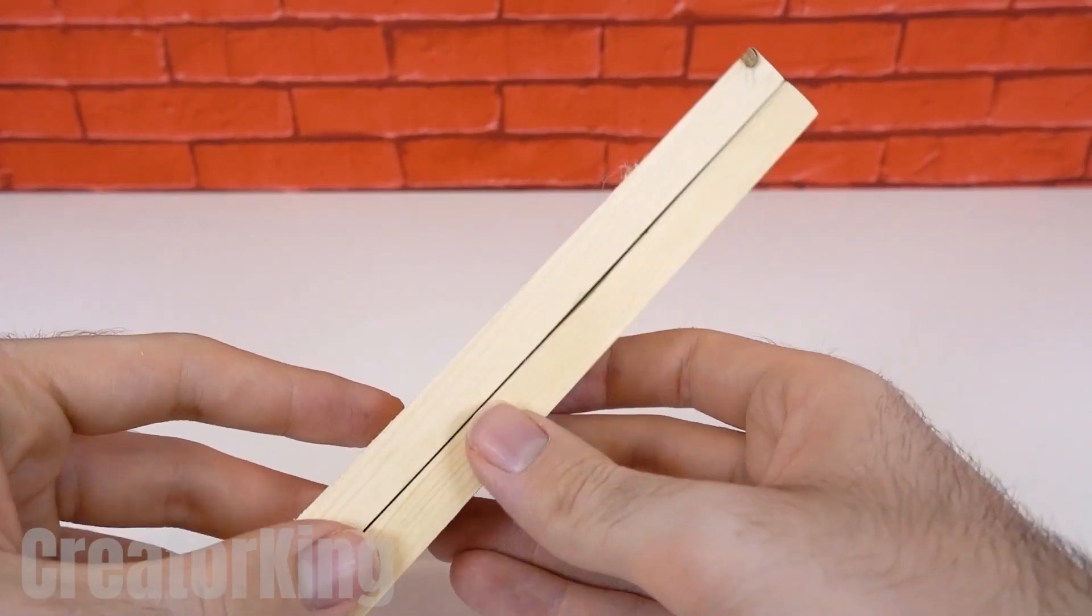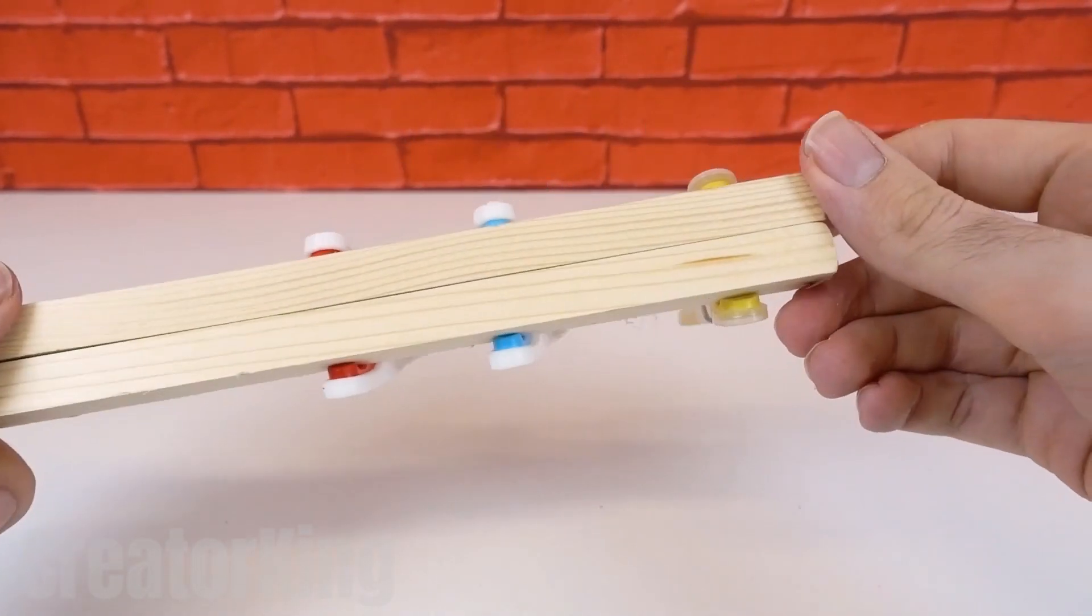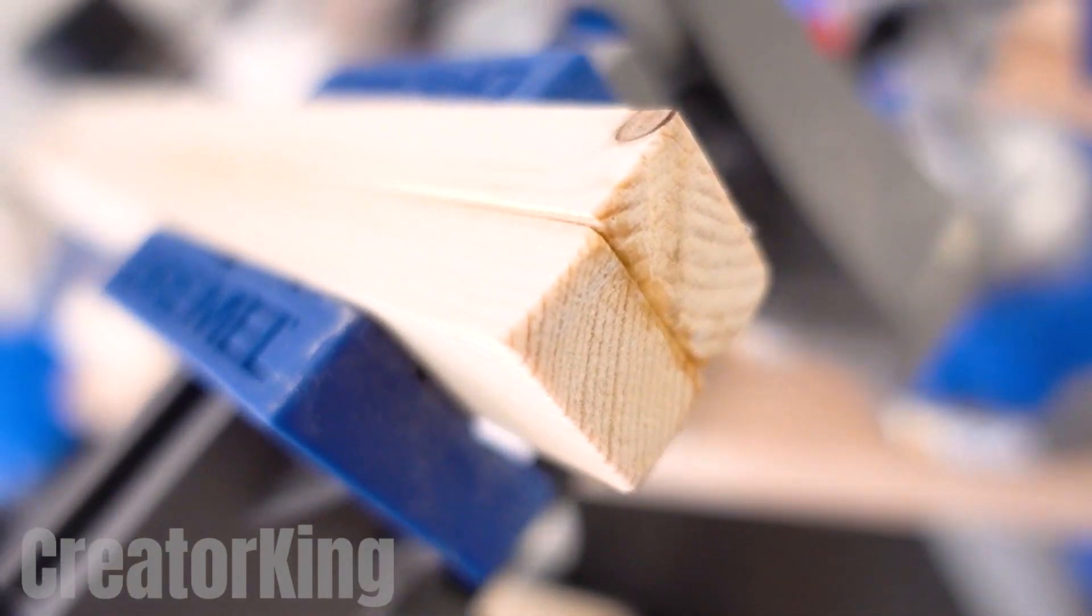Take some super glue and apply it over the entire surface we sanded to glue both wooden parts together. If you have more money, you can use real clamps.